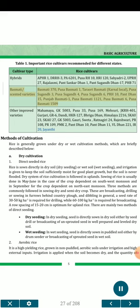Other improved varieties include: Mahamaya, GK 5003, PUSA 33, PUSA 169, Masuri, JKRH 401, Gurjari, GR 6, Dhandi, HKR 127, Brigudhan, Himalaya 2216, Scout 23, SKAU 27, Gauri, Sweta, Ratnagiri 24, Rajeshwari, PR 108, PR 109, PMK 2, Panth Dhan 10, Panth Dhan 11, BL Dhan 221, IR 20, Jayanti.